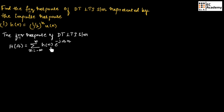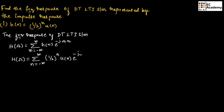Now, in place of H(n), let us substitute (1/2)^n u(n). So we can write H(ω) equals the summation from n equals minus infinity to infinity of (1/2)^n u(n) multiplied by e^(-jωn).